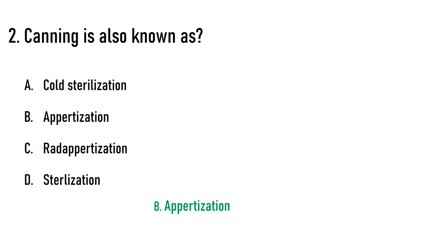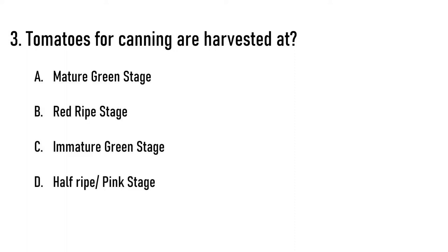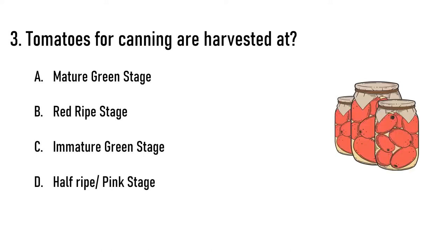Let me know in the comment box what is also known as cold sterilization. Next question: Tomatoes for canning are harvested at dash stage. Options are A) mature green stage, B) red ripe stage, C) immature green stage, D) half ripe or pink stage. The correct answer is option D, half ripe or pink stage.